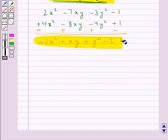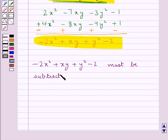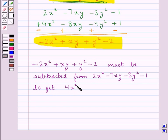So this is the required answer. Our final answer is -2x² + xy + y² - 2 must be subtracted from 2x² - 7xy - 3y² - 1 to get 4x² - 8xy - 4y² + 1. So this is our final answer.